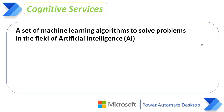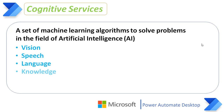What are the cognitive services available in Power Automate Desktop? They are: Vision, Speech, Language, Knowledge, and finally Search.